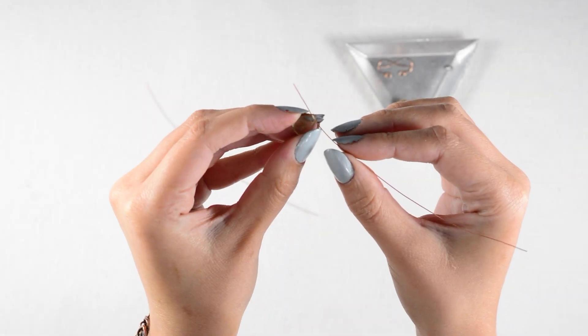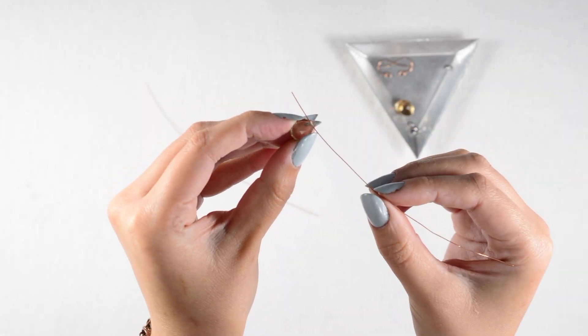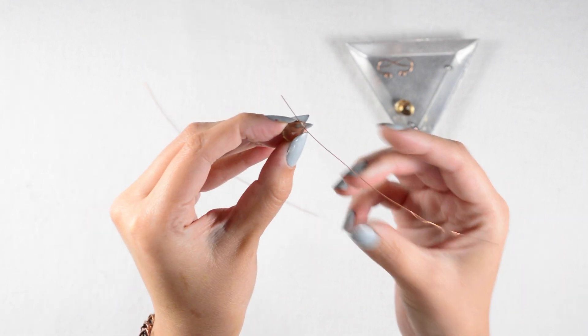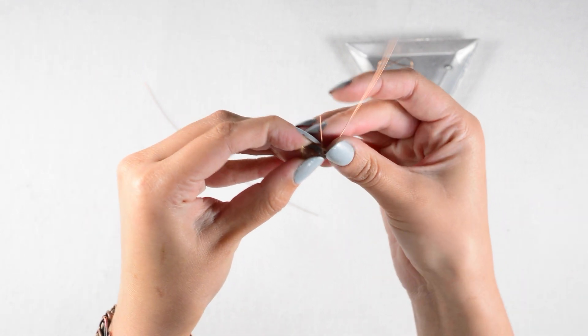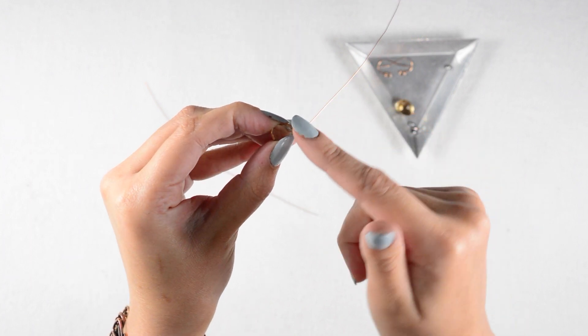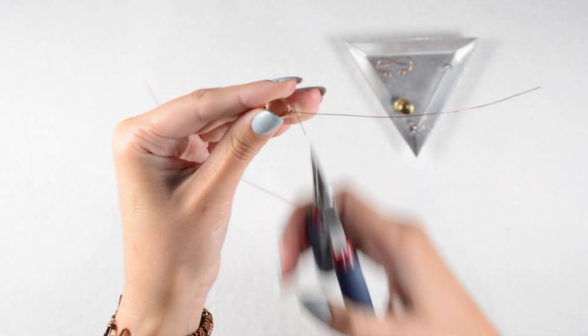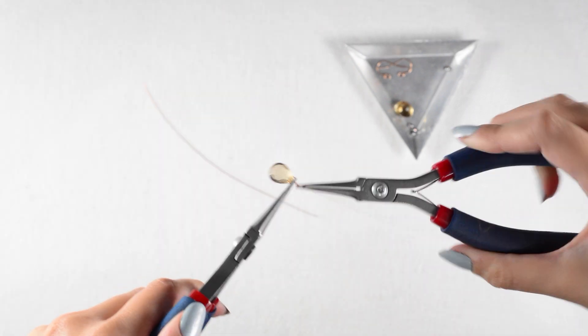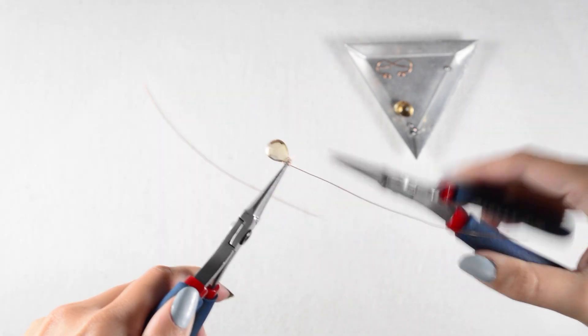I'll start by securing my first briolette to the end of my first wire. Situating this baby about half an inch in from the end, I will angle both ends of my wire up and then bend the longer tail of wire directly perpendicular to the top of the briolette. I'll then wrap my shorter tail just above that bend to secure my briolette in place.